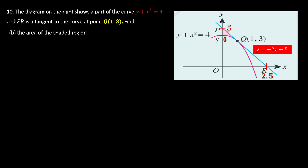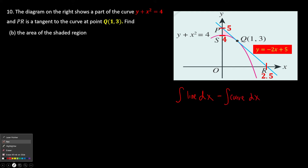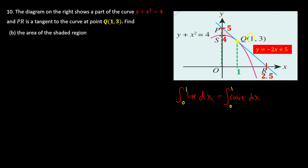The area of the shaded region is the small part bounded between the curve and the line. We project down to the x-axis from the line. However, the curve is blocking us, so we find the integration bounded to the x-axis from the line minus the curve. The boundary runs from zero to the x-coordinate of Q, which is 1. So we integrate the line minus the curve from 0 to 1.